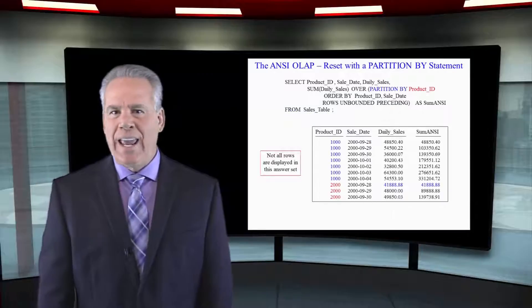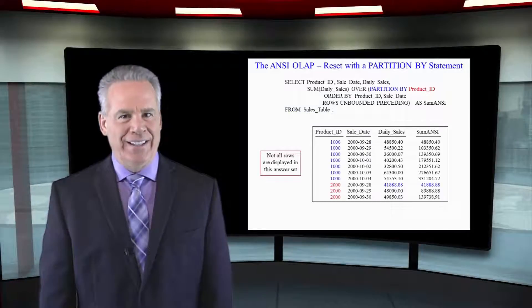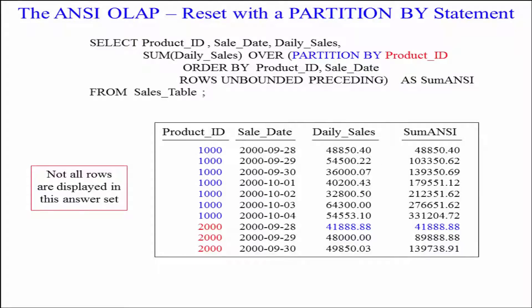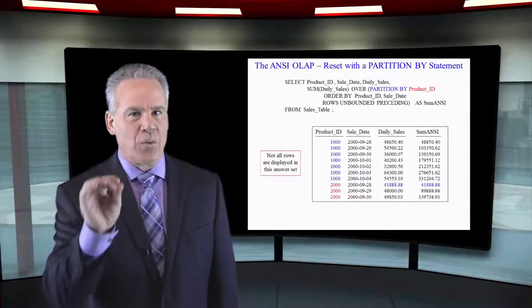When using the ANSI version of ordered analytics such as this CSUM, all you need to do is have a PARTITION BY statement — I've got it highlighted for you. PARTITION BY product ID, ORDER BY product ID and sale date, and that is going to reset only that ANSI OLAP. As you can see, when we go down to product ID 2,000, the CSUM starts again. PARTITION BY is how you have things reset.